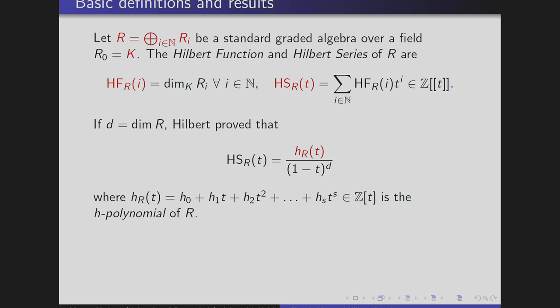If D is the Krull dimension of R, Hilbert proved that the Hilbert series is actually a rational function whose denominator is (1 - T)^D, while the numerator is some polynomial H_R(T). This polynomial is called the H-polynomial of R, and we are interested in its coefficients.